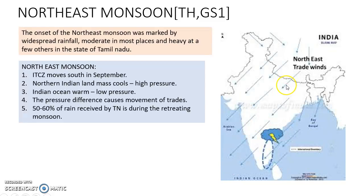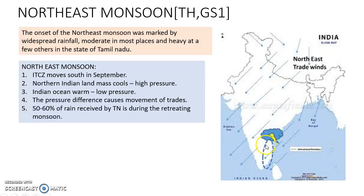The pressure difference between the North and the South will draw winds from the Himalayas and the Indo-Gangetic Plain, over the Bay of Bengal into the Indian Ocean. While these winds travel over the Bay of Bengal, they pick up a lot of moisture and this moisture falls as rain over the state of Tamil Nadu and many parts of Southern Peninsular India.